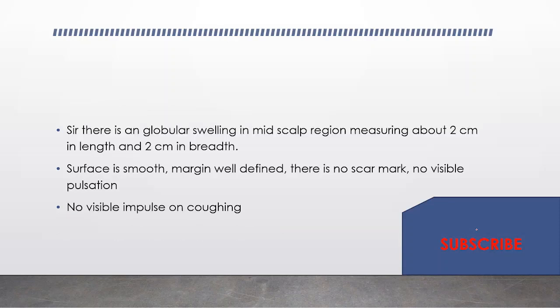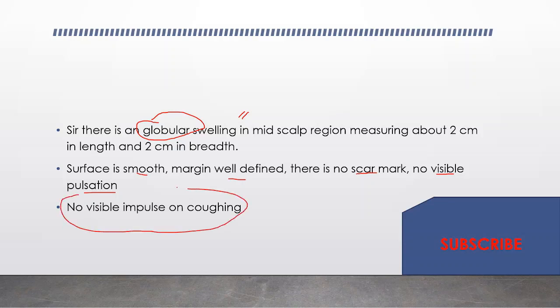Then start giving a running commentary: 'Sir, there is a globular-shaped swelling in the mid-scalp region, measuring about 2 cm in length and 2 cm in breadth.' As the swelling is globular, length and breadth will be equal. The surface is smooth, the margin is well-defined and regular. No scar mark, no visible pulsation, no visible vein, and no visible impulse on coughing.